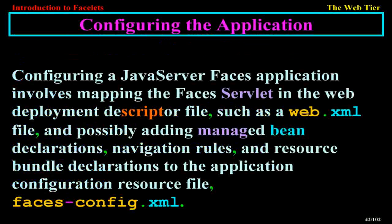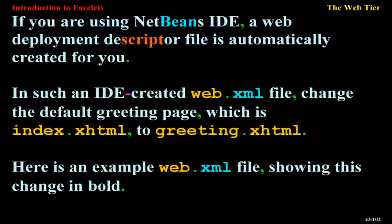Configuring the Application. Configuring a JavaServer Faces application involves mapping the Faces servlet in the web deployment descriptor file, such as a web.xml file, and possibly adding managed bean declarations, navigation rules, and resource bundle declarations to the application configuration resource file, faces-config.xml. If you are using NetBeans IDE, a web deployment descriptor file is automatically created for you. In the IDE-created web.xml file, change the default greeting page from index.xhtml to greeting.xhtml.